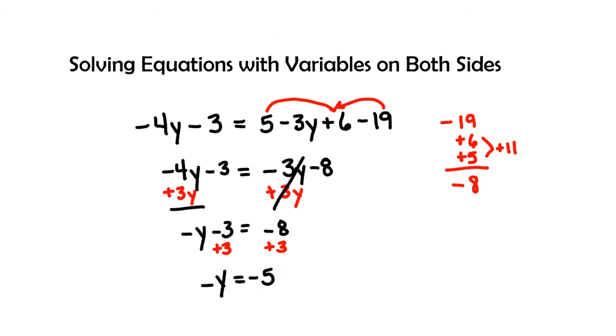Now this negative y is not necessarily fully isolated, we have a negative 1 or I call it the imaginary 1. So we're going to divide by a negative 1 on both sides. So when I divide by a negative 1 from both sides, I have y equals, a negative and a negative is a positive, so y equals 5.